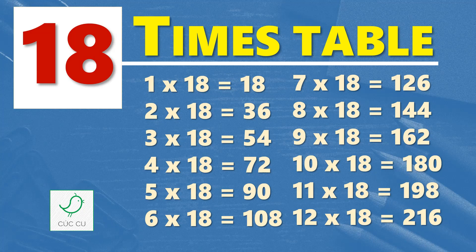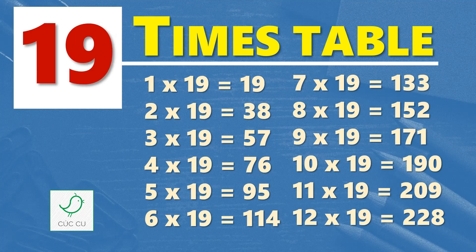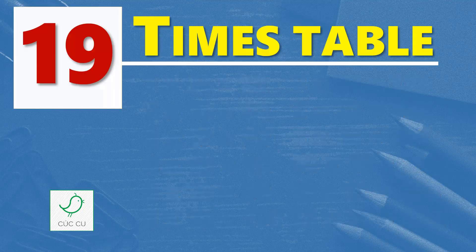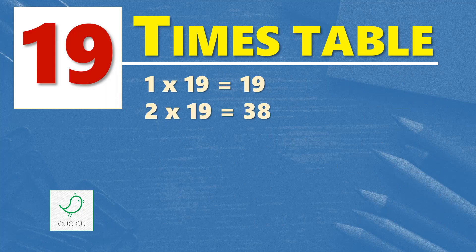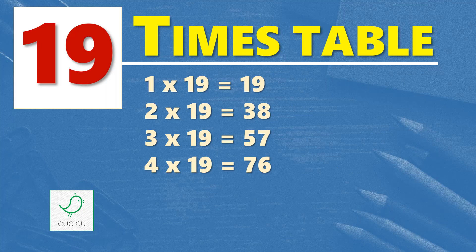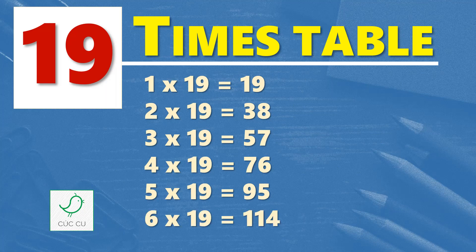Nineteen times table. One times nineteen is nineteen, two times nineteen are thirty-eight, three times nineteen are fifty-seven, four times nineteen are seventy-six, five times nineteen are ninety-five, six times nineteen are one hundred and fourteen.